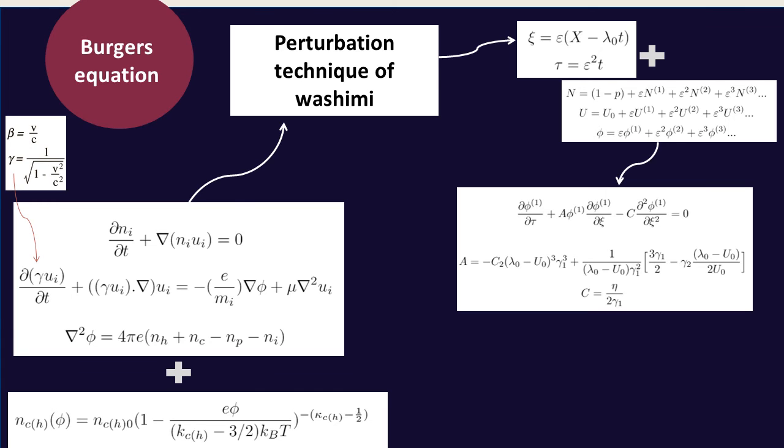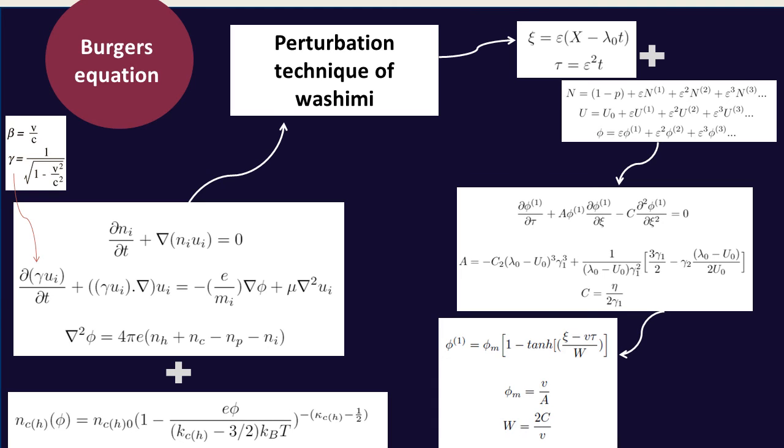Burger's equation and its stationary solution indicate that the considered four component relativistic plasma supports the propagation of shock structures. The nonlinear effects are represented by the coefficient A, the dissipation effects by the coefficient C, and as I said before, the balance between these two effects give rise to shock occurrence.